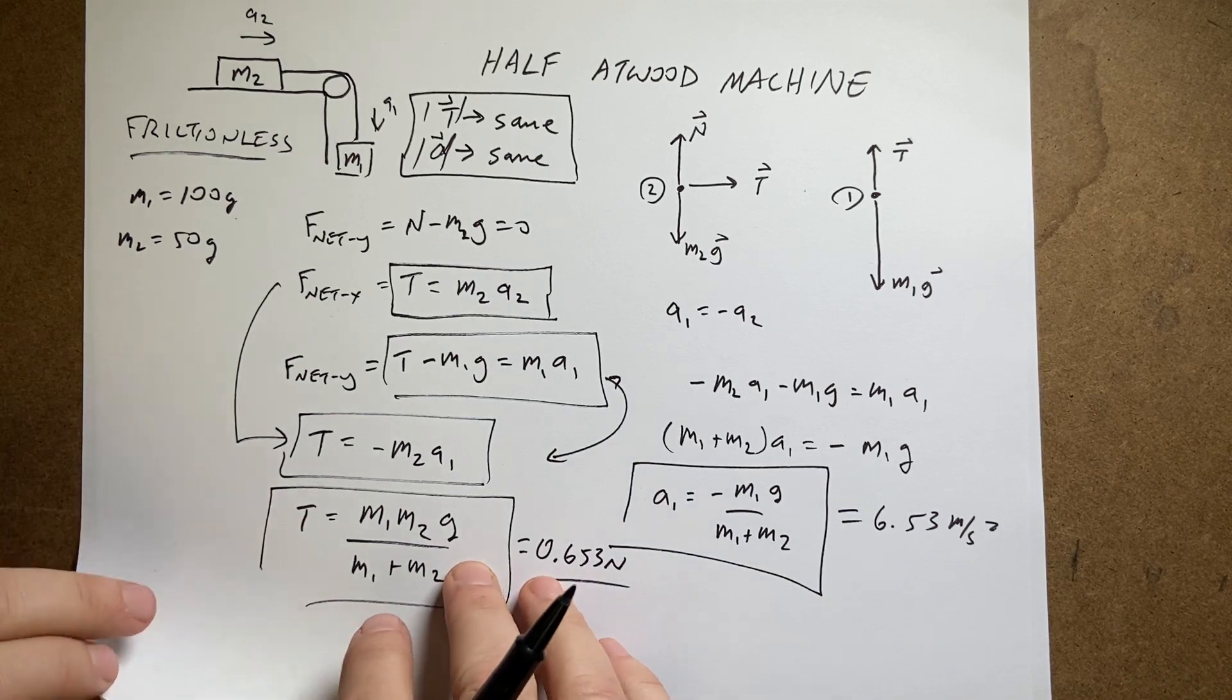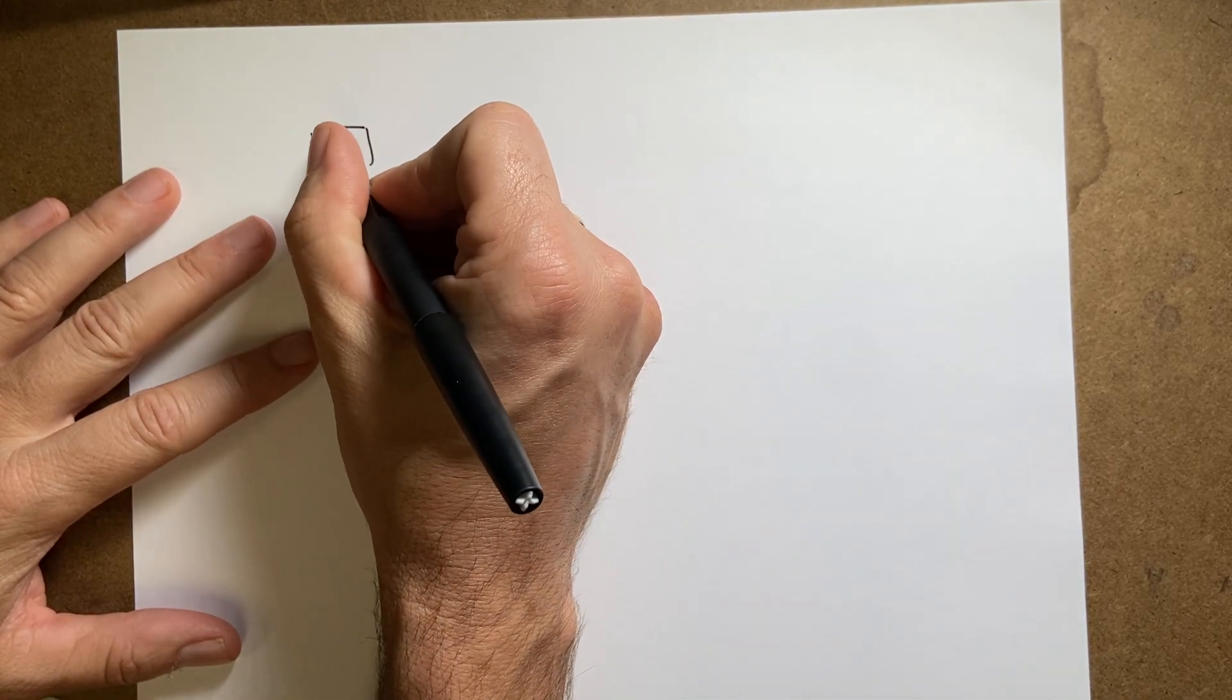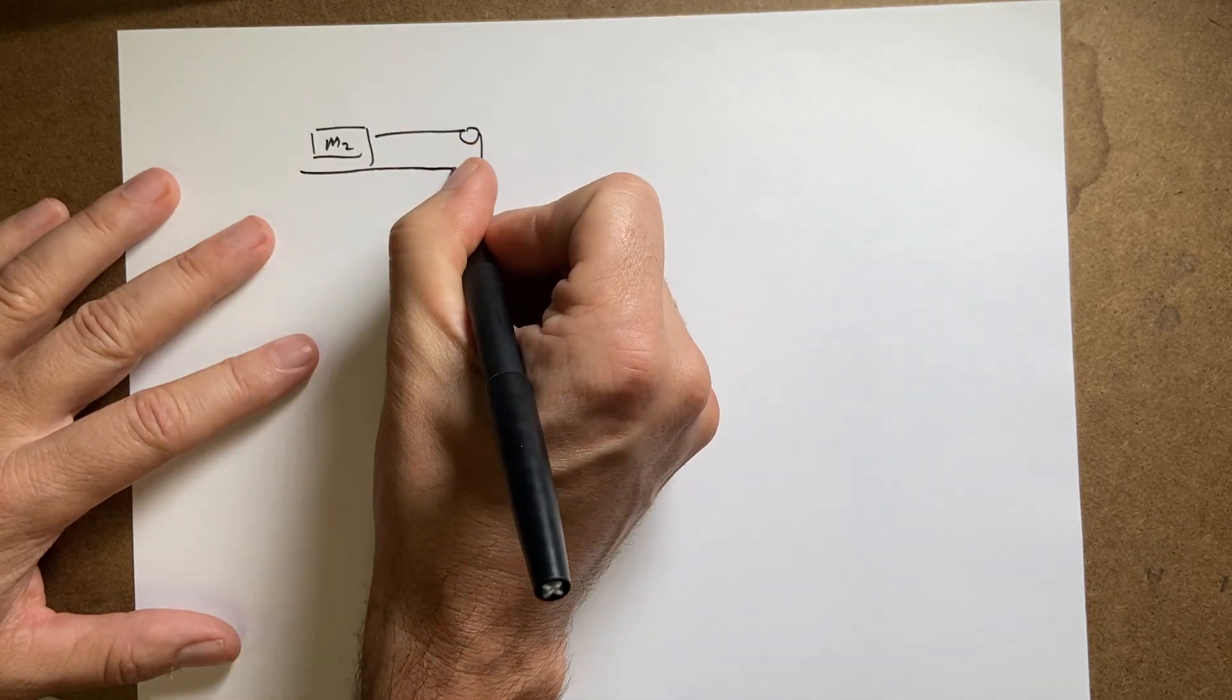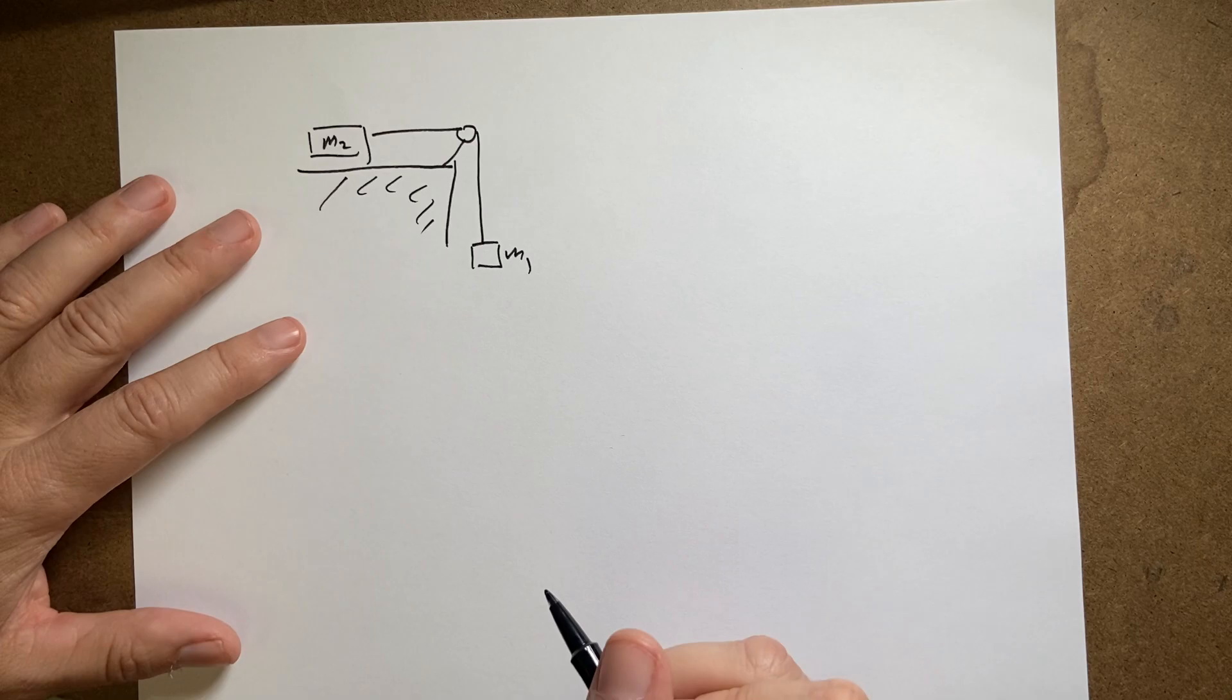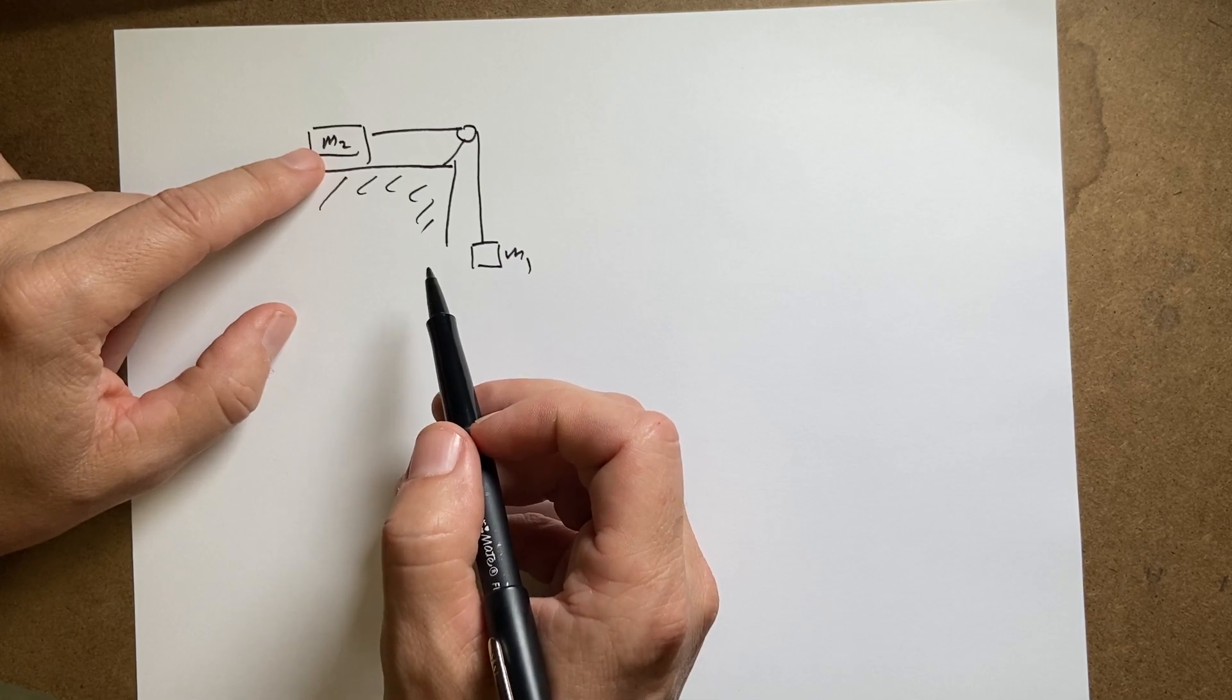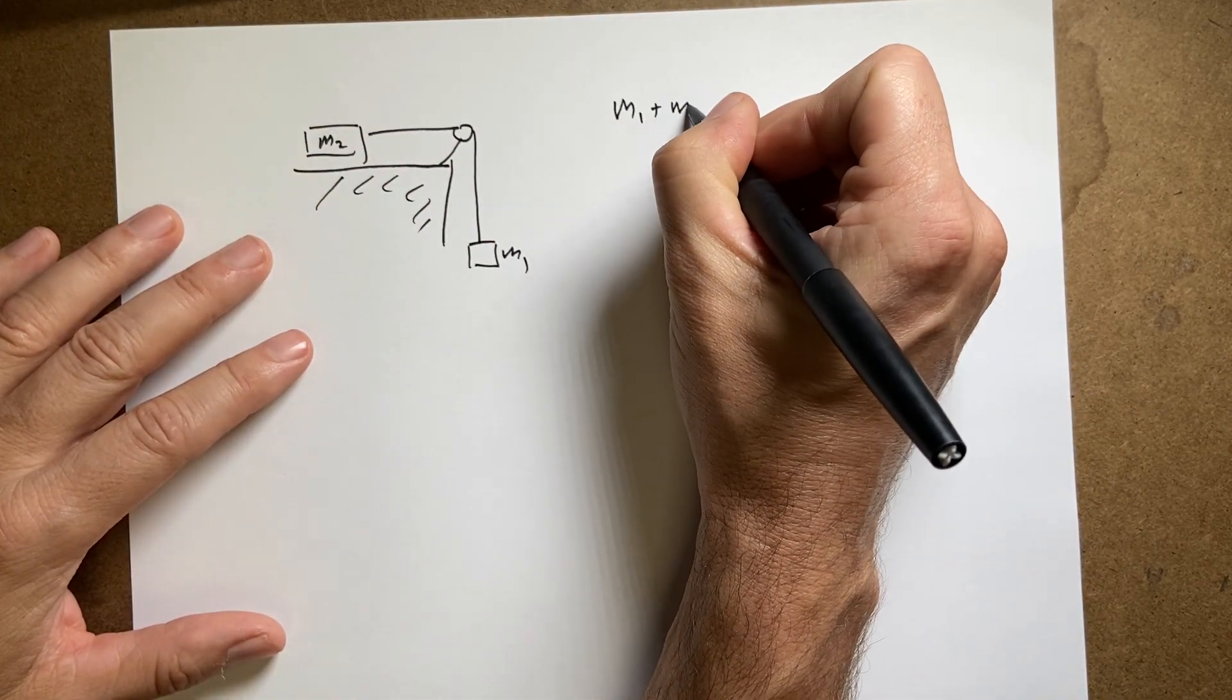Let's think about this one other way because this is kind of useful. So here I have this. Here's m2. Here's m1. Here's my table. Okay. So what if I think of this whole system as both of these masses as my system? If both of these masses are my system, then there is no tension, right? Because the tension is an internal force. So I have my system is m1 plus m2.